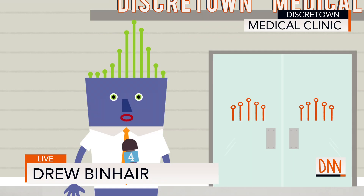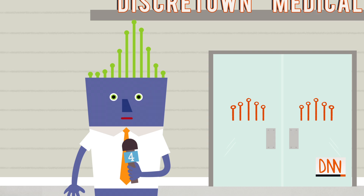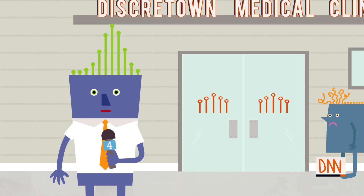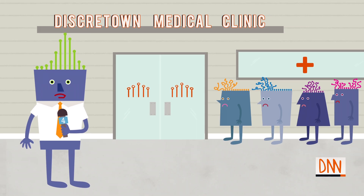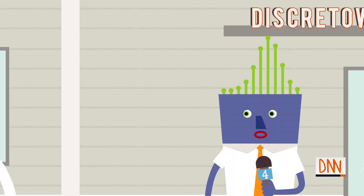This is Drew Benhair reporting live from the Discreet Town Medical Clinic. The town is grappling with an outbreak of hypertangulosis, a condition which makes hair tangled and gnarled. As you can see, the line is out the door. Let's go to Dr. Sarah Straighthair for the latest.